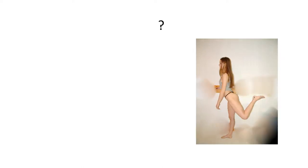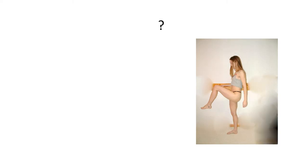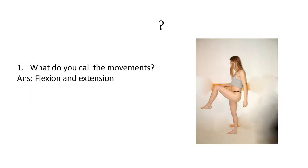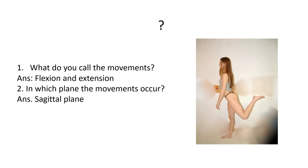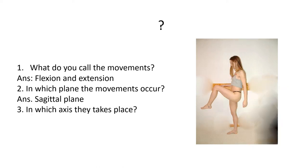Observe the movements of the lower limb. What do you call those movements? They are flexion and extension. In which plane are they happening? The sagittal plane. In which axis are these movements taking place? The frontal axis.